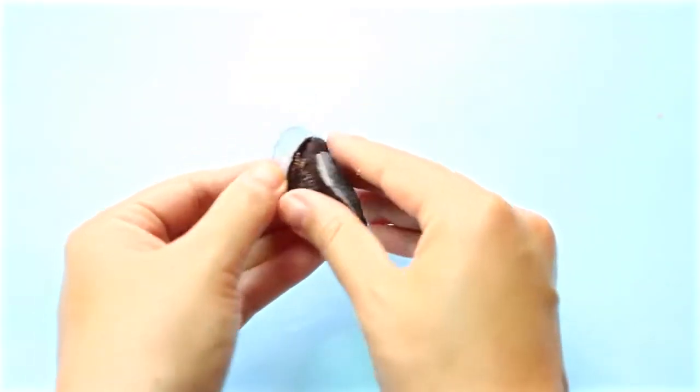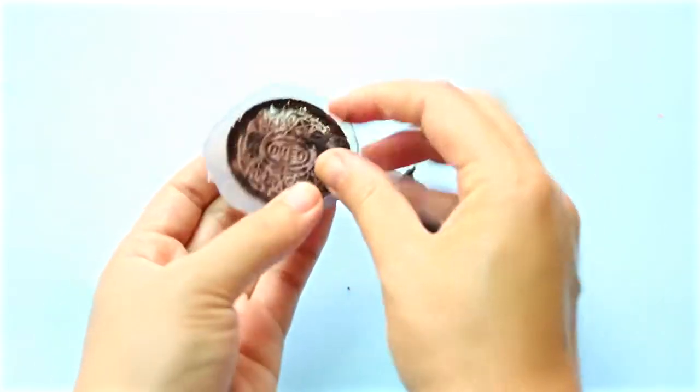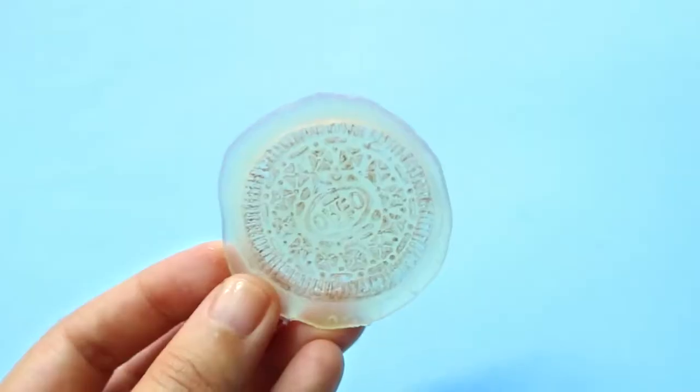Once you're done, you can break up the Oreo to take it out of the glue mold. To clean the mold, you can wash it with some warm soapy water. And here's the final result.